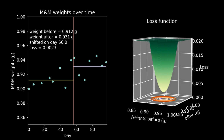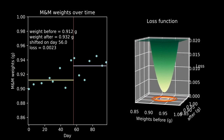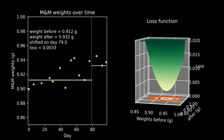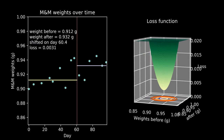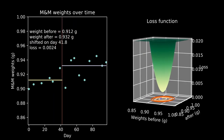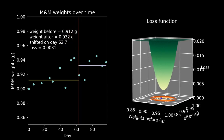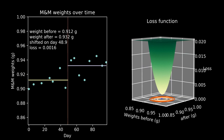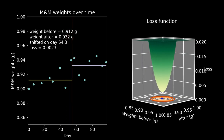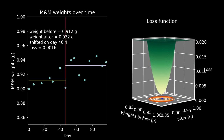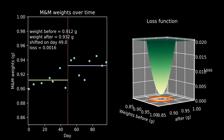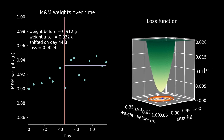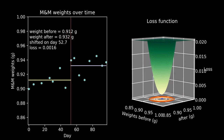Another trick is to take the parameter we chose a fixed value for — our shift day — and increment it just a little bit. We can do this again and again to get a series of three-dimensional plots, using time to represent our fourth dimension. If you watch carefully as the shift day progresses, you can see the bottom of the bowl jump up and down, showing how the lowest possible loss changes depending on the shift day. We're looking for the very lowest of all possible values — that is the optimal estimate — which depends on our estimate of M&M weight before and after, but also on our choice of the shift day. There are three separate dials we have to spin to find the best answer.